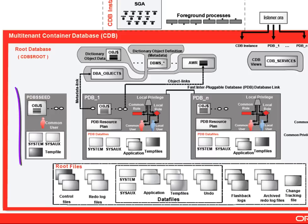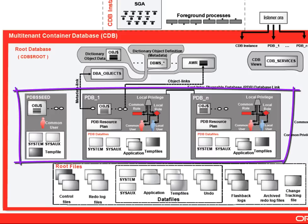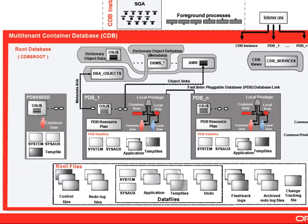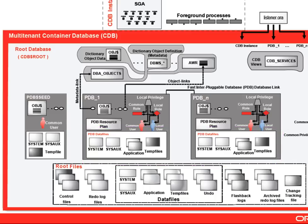Inside one CDB, you can have up to 253 PDBs, including the seed. Each PDB contains a set of data files. The seed contains the SYSTEM and SYSAUX tablespaces as well as a temporary tablespace. For the other PDBs, each will have its own SYSTEM and SYSAUX tablespaces and optionally a temporary tablespace, as well as user tablespaces. Note, however, that PDBs do not have control files nor redo log files — these are shared among PDBs through the ones that exist in the root container.